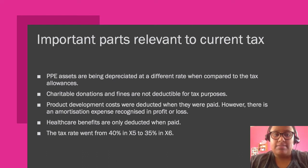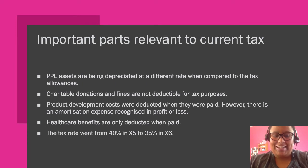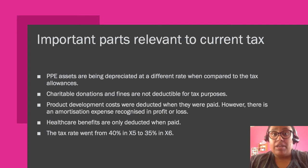Charitable donations and fines are not deductible for tax purposes, so those would need to be reversed out and excluded from our taxable income calculation. Product development costs were deducted when they were paid — in X2 those costs were incurred and a deduction was given when paid in cash. However, those costs were capitalized and are amortized over five years, so every year an amortization expense comes through profit or loss but there is no related tax treatment because it has already been deducted.